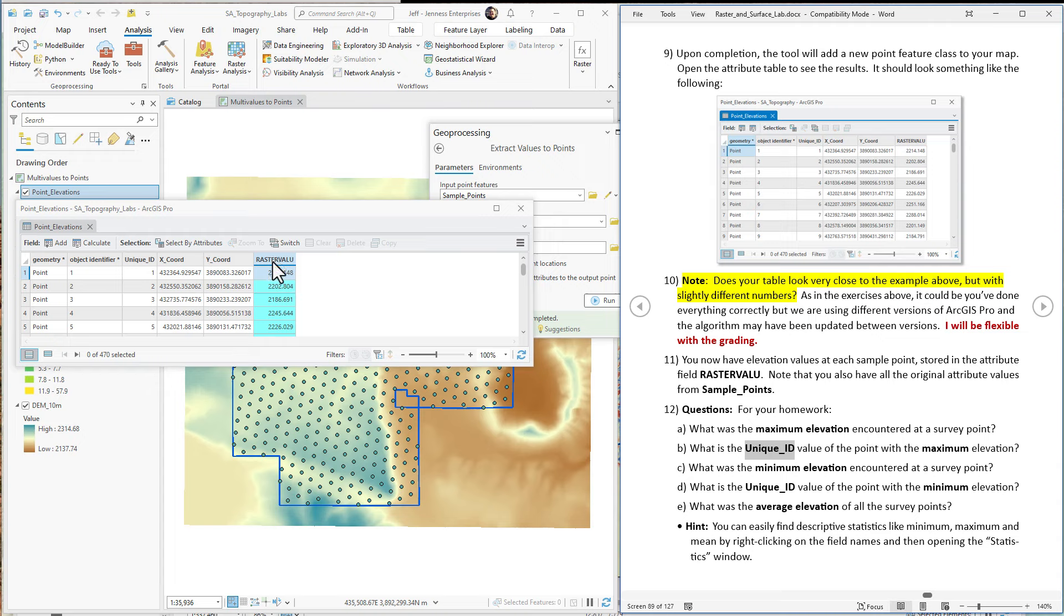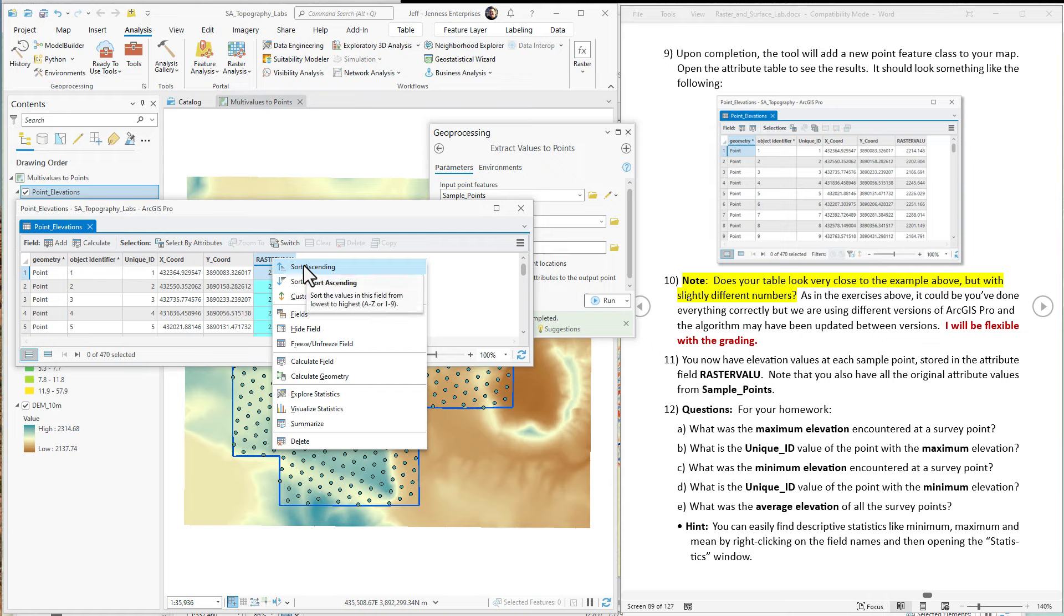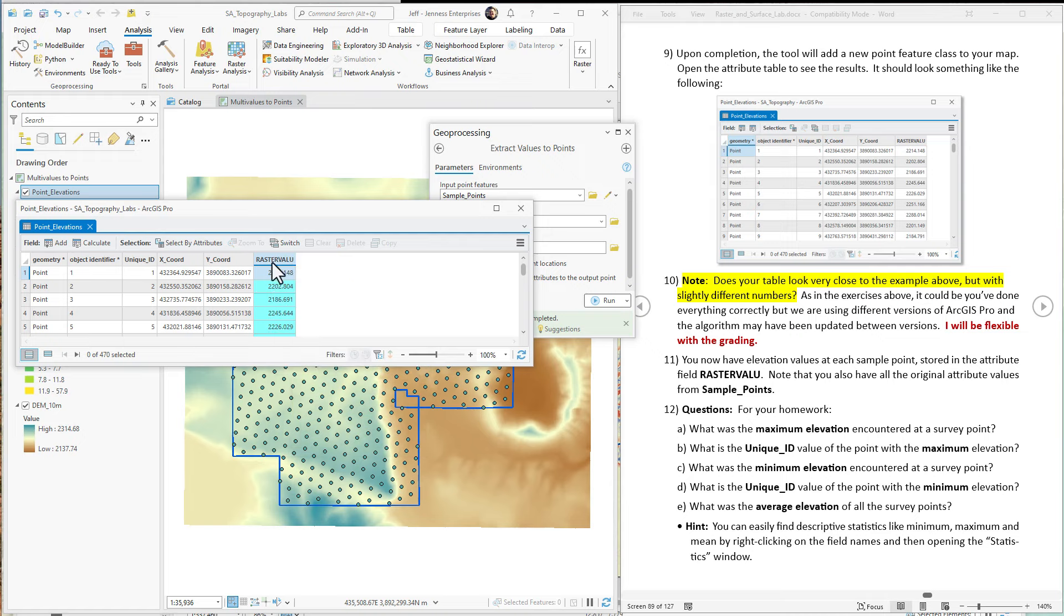But we also want to know what is the unique ID value of that. So who remembers how to sort a list from high to low? All you have to do is double click on it. You can either double click or right click and do sort ascending and sort descending.